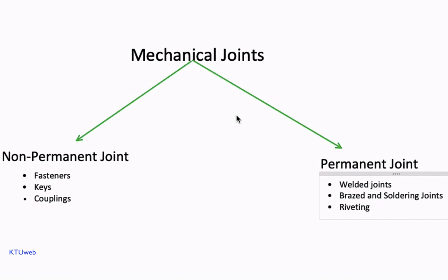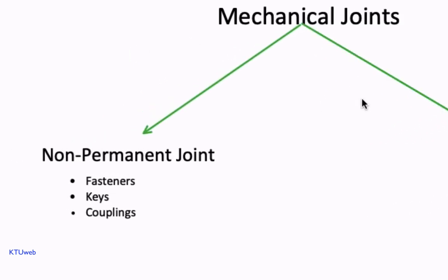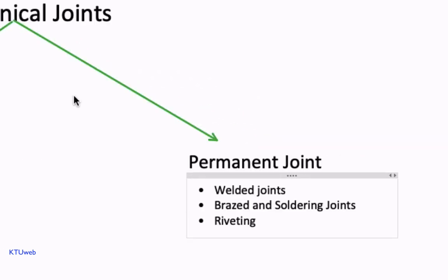Mechanical joints are broadly classified into two types: non-permanent joints and permanent joints. Non-permanent joints can be assembled and disassembled without damaging the components, such as threaded fasteners like screw joints, keys, and couplings. Permanent joints cannot be disassembled without damaging the components. These joints can be of two kinds depending upon the nature of force that holds the two parts — mechanical origin, for example riveted joints or press/interference fit, or molecular force, for example welded, brazed, or soldered joints. Joints with adhesives are also considered as the molecular kind of joints.